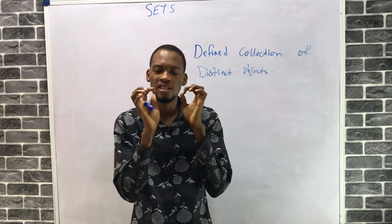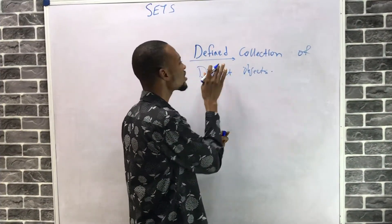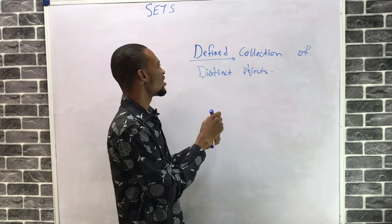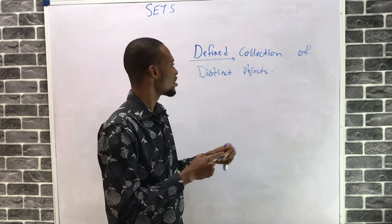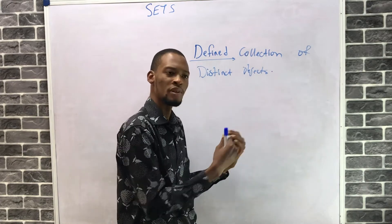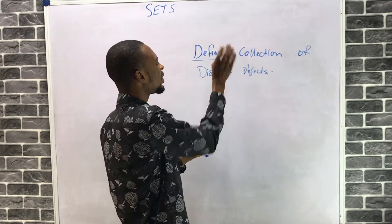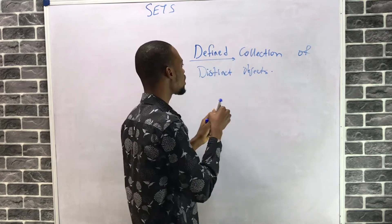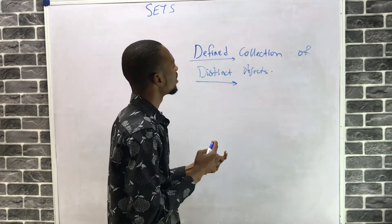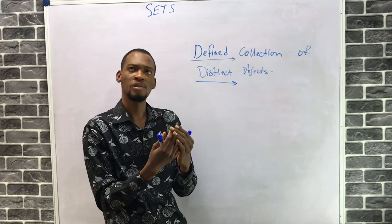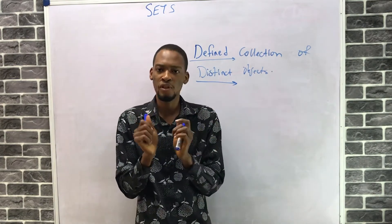Defined means the collection must be defined. A set is a collection — like a group or arrangement — of objects, but the collection must be defined and it must be distinct.